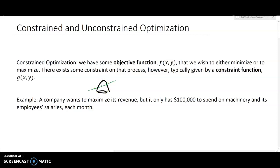As an example to get the sense of objective function and constraint function, suppose we have a company that wants to maximize its revenue but it only has $100,000 to spend on machinery and employee salaries each month. Inevitably the more we can produce and sell, the better off our company will be.